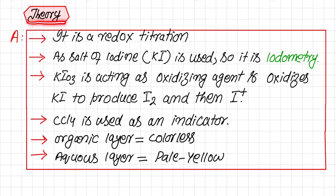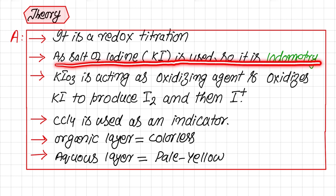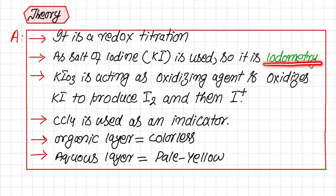The basic theory of this titration is that it is actually a redox titration, meaning some species will be oxidized and some will be reduced. A salt of iodine such as potassium iodide is used, not iodine itself in neutral form. That is why it is called iodometry. If direct iodine were involved, we would call it iodimetry.